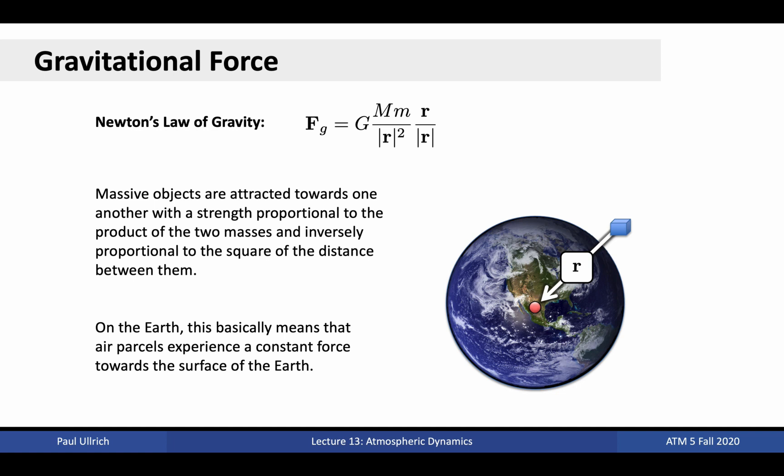The gravitational force is the third force that is relevant to the atmosphere. The gravitational force is responsible for producing attraction between massive objects. In accordance with Newton's law of gravity, the strength of that attraction increases linearly with the product of the masses of the two objects, and is inversely proportional to the square of the distance between those objects. Given the thinness of the atmosphere, this basically means that air parcels are experiencing a constant tug towards the center of the earth, in accordance with the gravitational constant, 9.8 meters per second squared. The gravitational force works in the vertical, pulling air towards the surface.